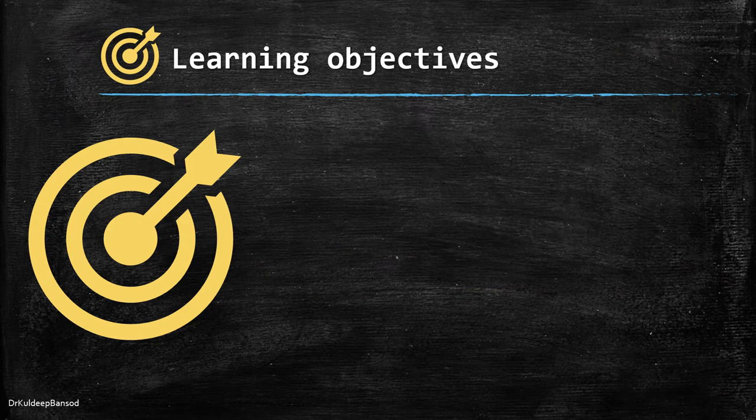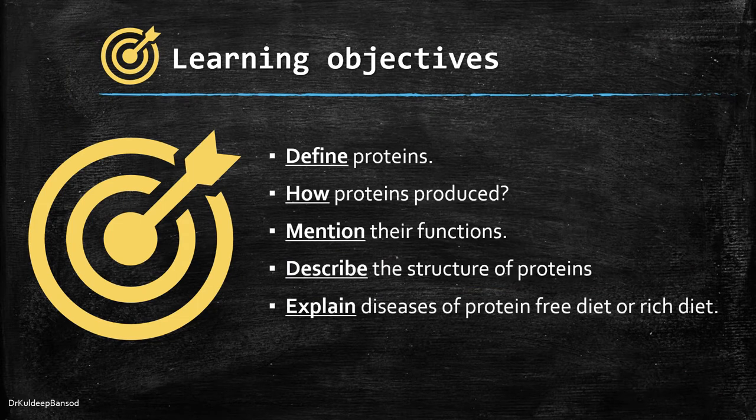After going through this learning dialogue, you will be able to define proteins, how proteins are produced, and what are the functions of proteins. You will also describe the structure of proteins and mention the various bonds responsible for the protein structure, and lastly explain diseases of protein-free diet or protein-rich diet. Let's see them one by one.